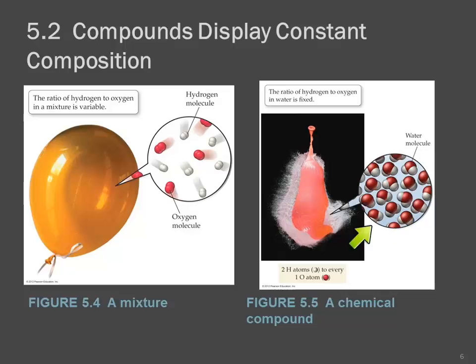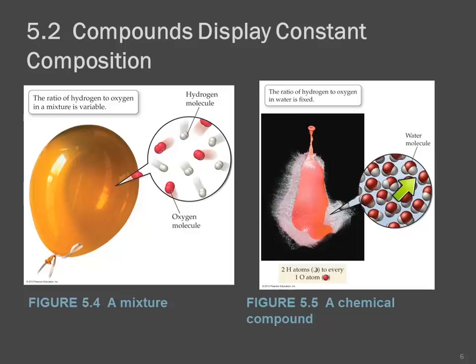Here, again, we have oxygen and hydrogen, but this isn't a mixture. It's combined in a specific way to form water. Every water molecule has one oxygen and two hydrogens — there's a fixed ratio of hydrogen to oxygen. If you have water, it's always two hydrogens to one oxygen. Over here in the balloon, it's a mixture, and you could have more or less oxygen relative to hydrogen.